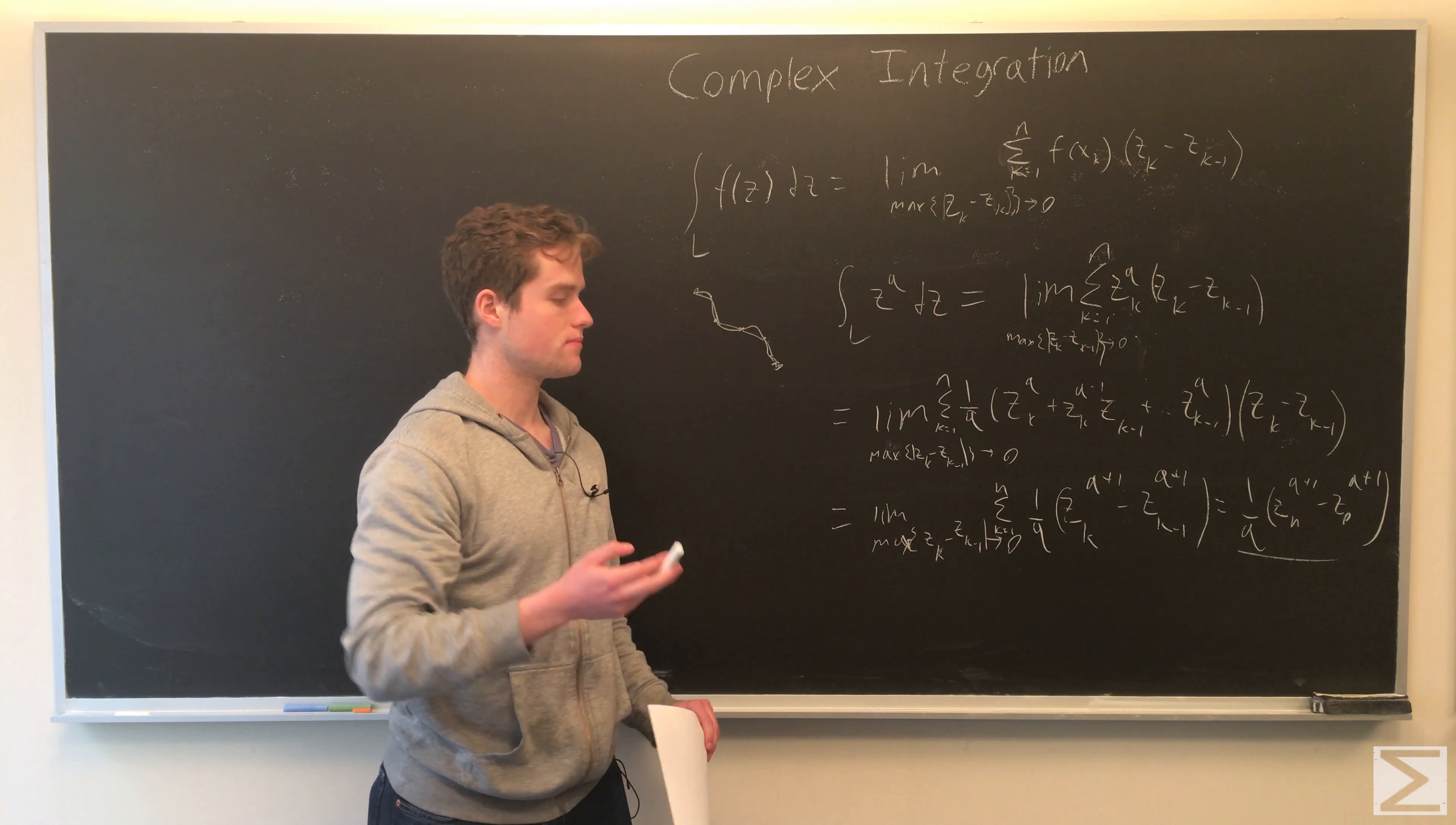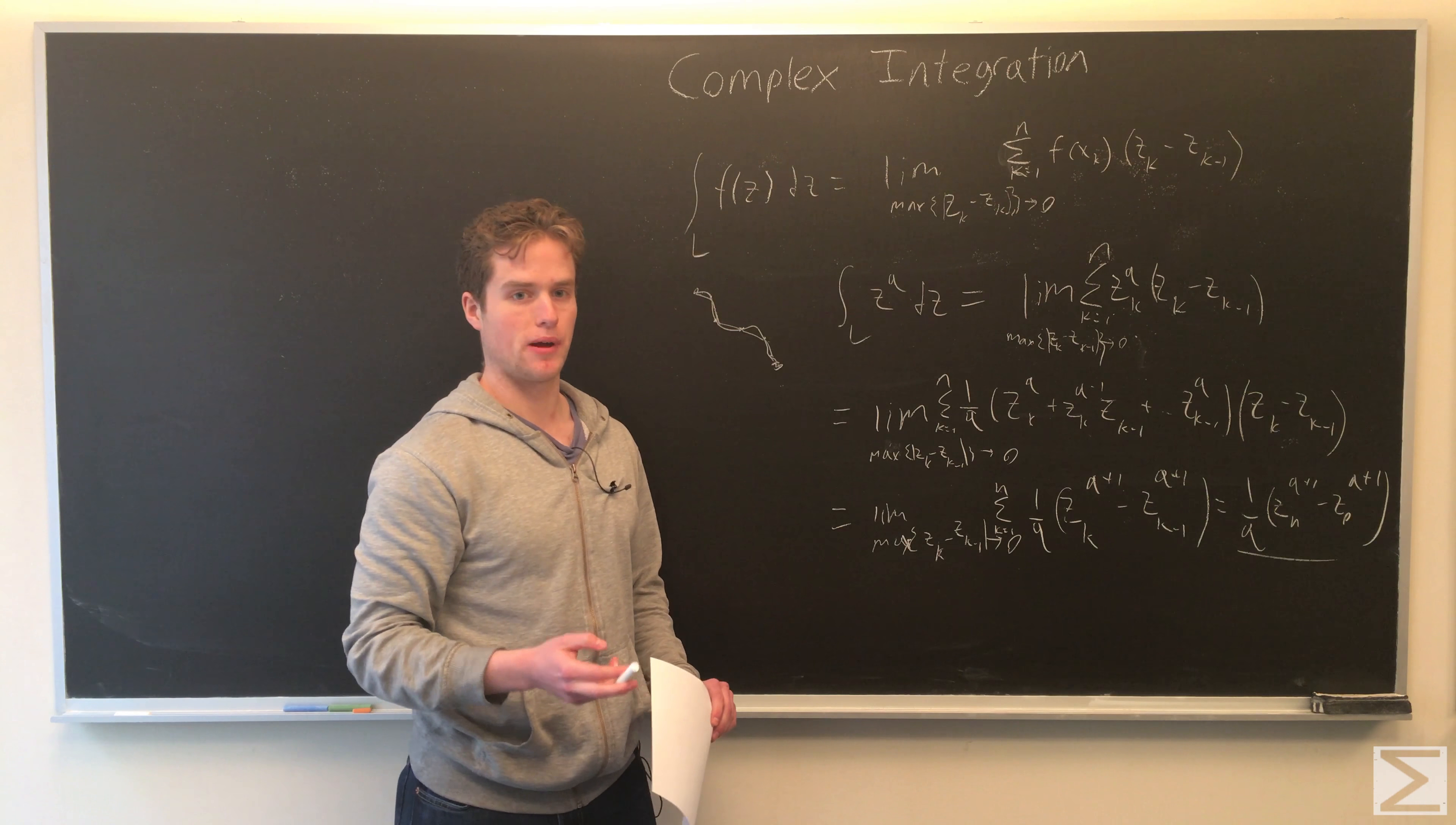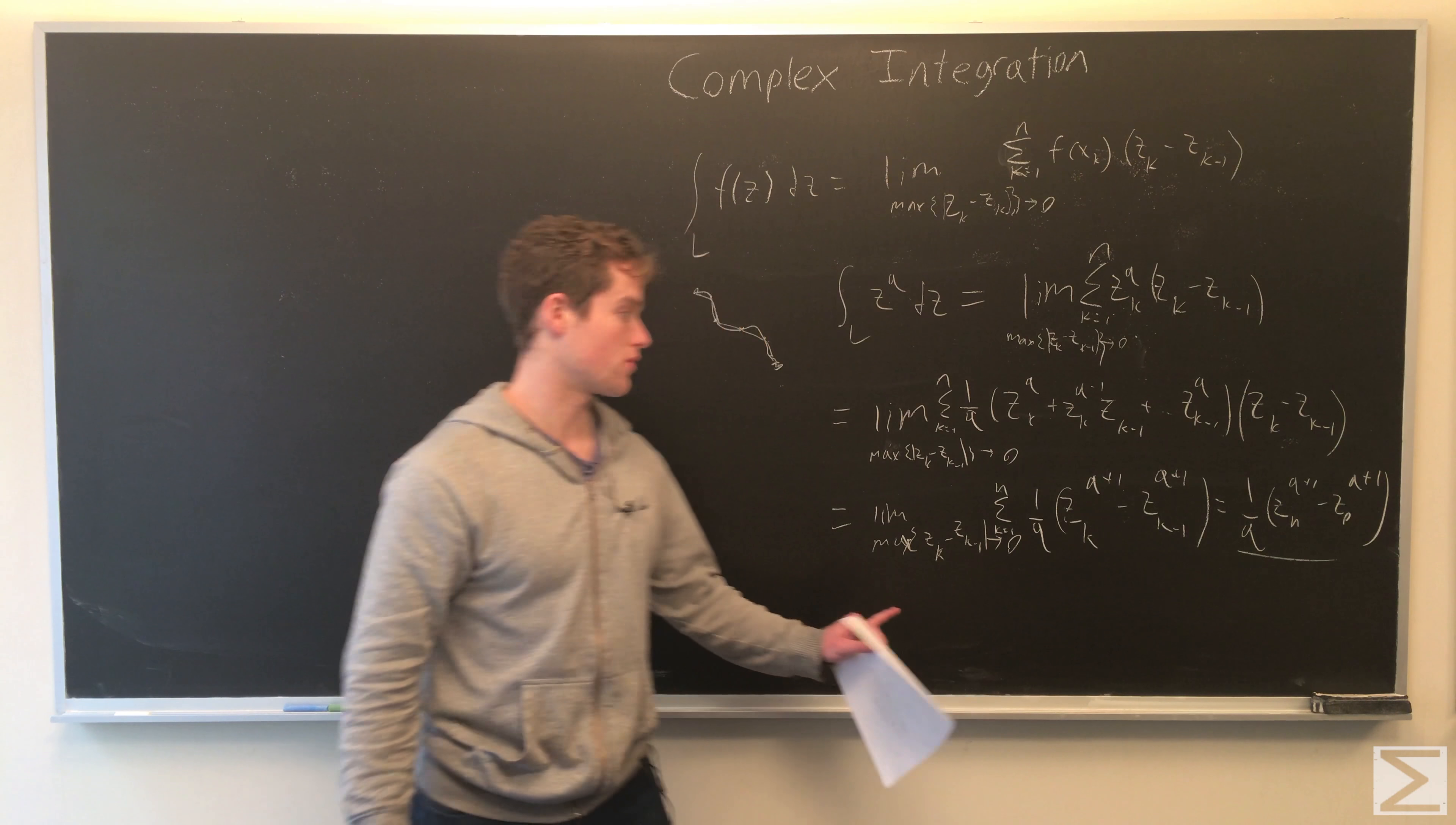We can note that as these points become arbitrarily close, this will approach the same limit if we replace this. So we add them all together, multiply by 1 over q. This thing here, times (z_k minus 1), gives us z_k to the (q+1) minus z_{k-1} to the (q+1) times 1 over q.